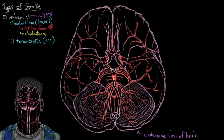This atherosclerosis commonly happens in the middle cerebral artery, possibly on both sides, inside the internal carotid arteries right as they turn into the middle cerebral arteries, and in the basilar artery. So these are three key locations where atherosclerosis occurs, and it generally affects the larger arteries of the brain.